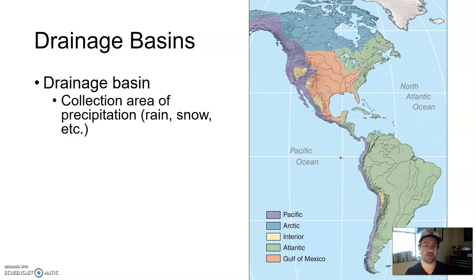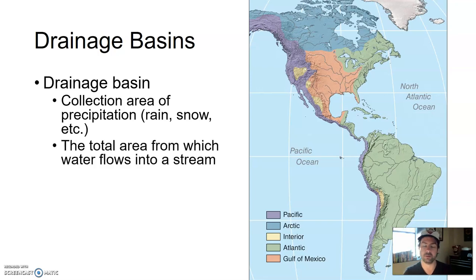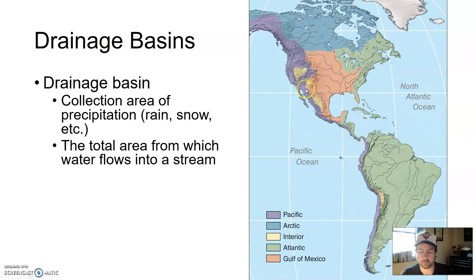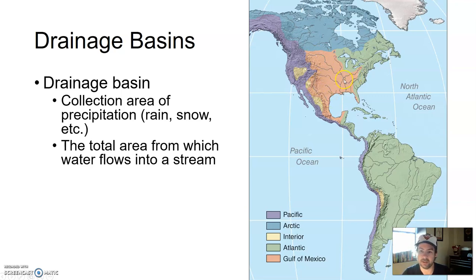A drainage basin is a collection area of precipitation — rain, snow, etc. Another way to put it: it's the total area from which water flows into a particular stream. What you're seeing here on this map illustrates where this water goes. For instance, in the United States, if any water falls in the central US — anything east of the Rockies but not quite on the East Coast, shown in the pinkish-red color — all that water will eventually flow into the Gulf of Mexico.